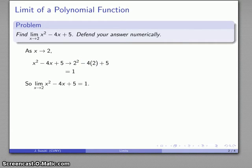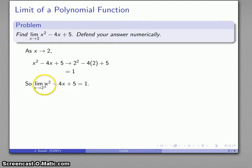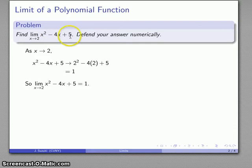We can say that the limit as x approaches 2 of x squared minus 4x plus 5 is equal to 1. As x gets close to 2, this expression gets close to 1. As an answer to the first part of the question, we don't really have to do anything else — however, we also want to defend our answer numerically.